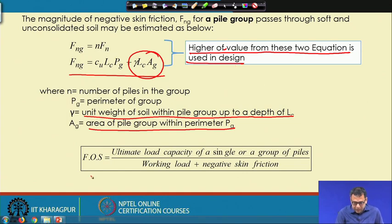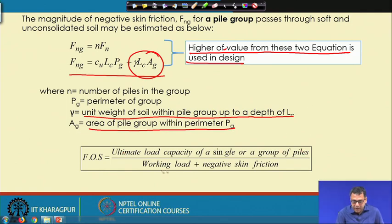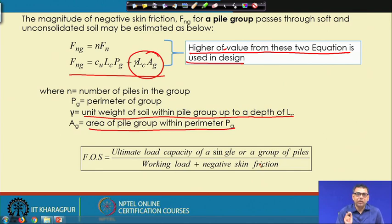For the factor of safety, calculate the ultimate load carrying capacity of the single or group pile — remembering that we do not consider the l_c portion; we consider only the length l minus l_c for pile friction resistance calculation. The factor of safety equals the ultimate load carrying capacity divided by the working load P plus the negative skin friction F_n, and this should be greater than 2.5 to 3.